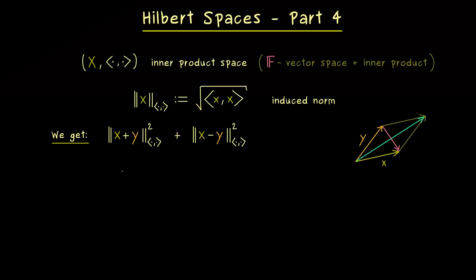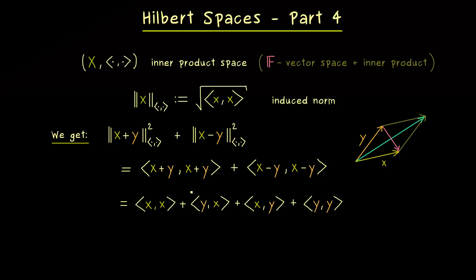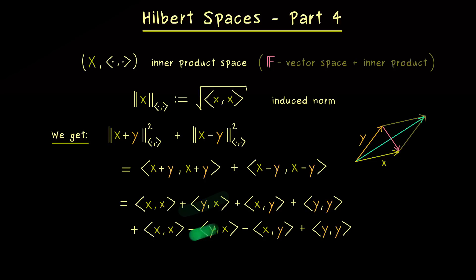This we can calculate, because we know the norm is just given by an inner product. So we can rewrite the whole thing accordingly, and this is really helpful because we know the properties of an inner product — most importantly, we know that we have additivity in both arguments. For the first term, we can pull out the additions and get back four parts, and similarly for the second term, just with two minus signs. This immediately tells us that the middle parts cancel, so the only things that remain are the inner product with x and the inner product with y, which we can simply write as the norm squared.